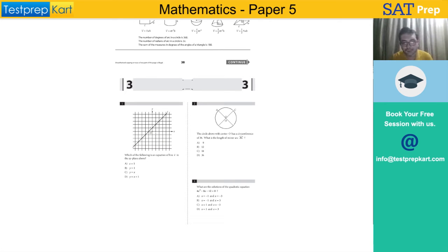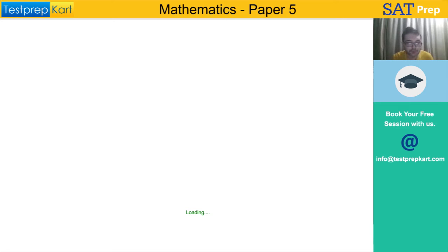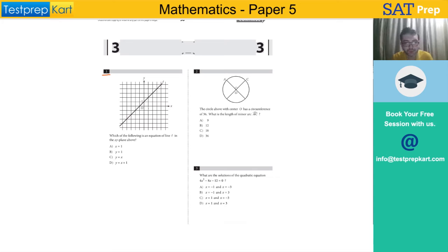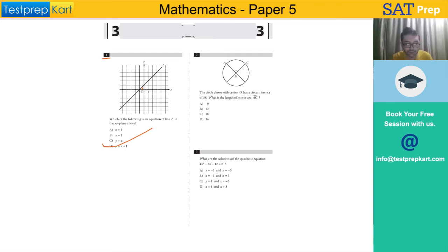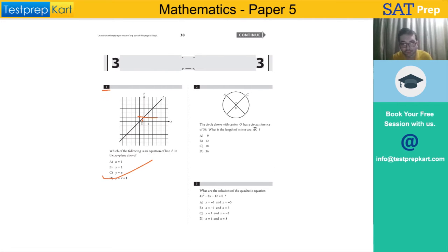Now let us begin. This is SAT Paper 5, the non-calculator section. Let us begin solving this paper. Look at this straight line - the line has an intercept of 1 and a slope of 1, so the equation of the straight line is y = x + 1. The y-axis intercept is equal to 1.